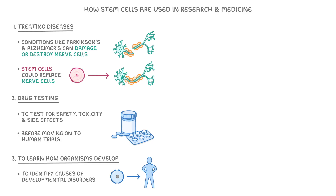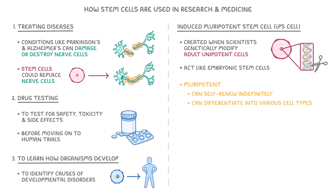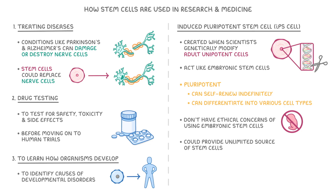A really interesting type of stem cell is the induced pluripotent stem cell, or IPS cell. These cells are created when scientists genetically modify adult unipotent cells, which allows these cells to act like embryonic stem cells, which are generally pluripotent. They have massive benefits, because IPS cells can self-renew indefinitely and can differentiate into various cell types, but they don't have the ethical concerns of using embryonic stem cells directly. In theory, this could provide an unlimited source of stem cells for both research and medical treatments.